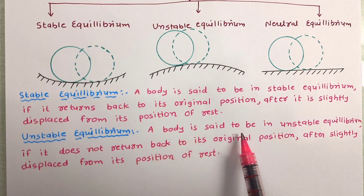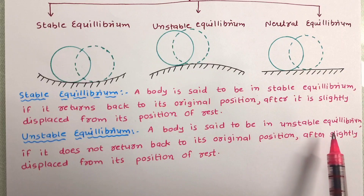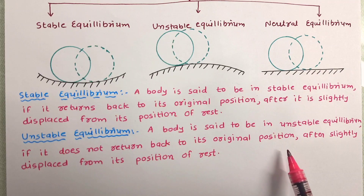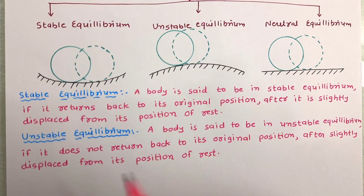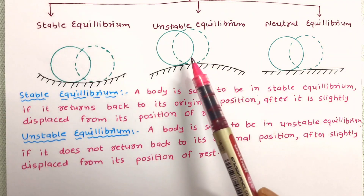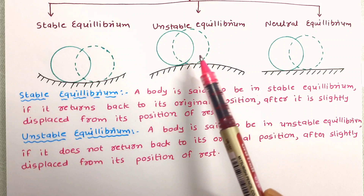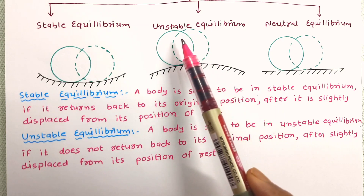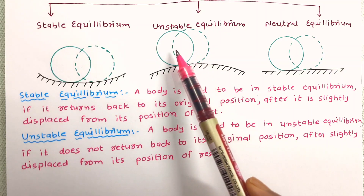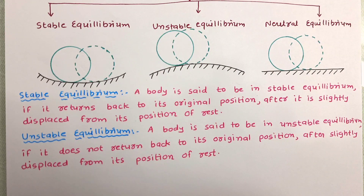A body is said to be in unstable equilibrium if it does not return back to its original position after it is slightly displaced from its position of rest. As in this case, after a slight displacement, this body will not come to its original position.